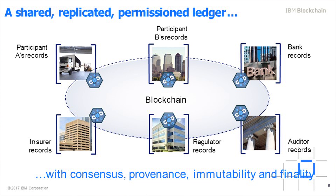The ledger is shared, replicated, and permissioned — so everyone can go back and forth working on that ledger at the same time. You see records pass from, say, a regulator to an auditor. The four key tenants of blockchain are: consensus, providence, immutability, and finality.